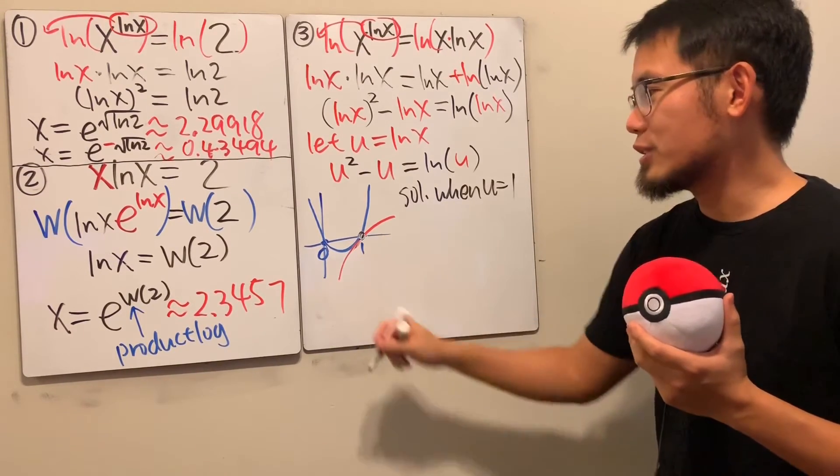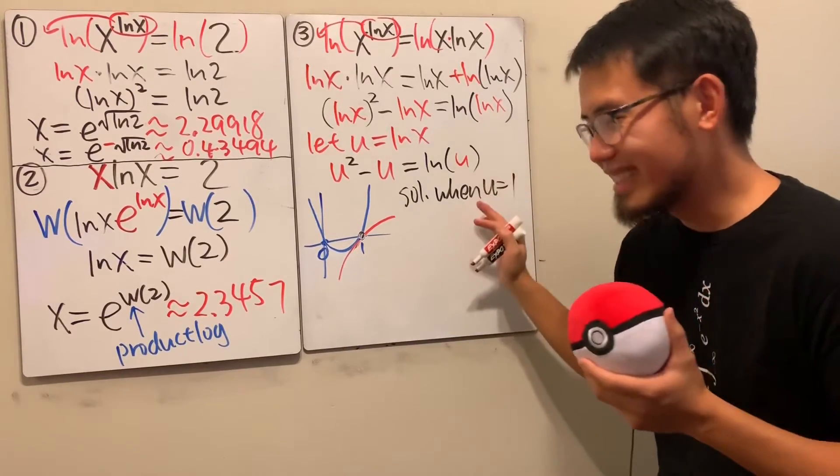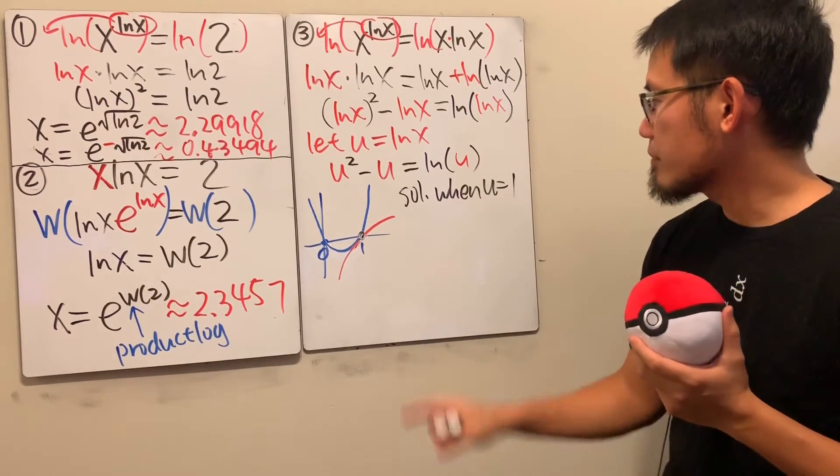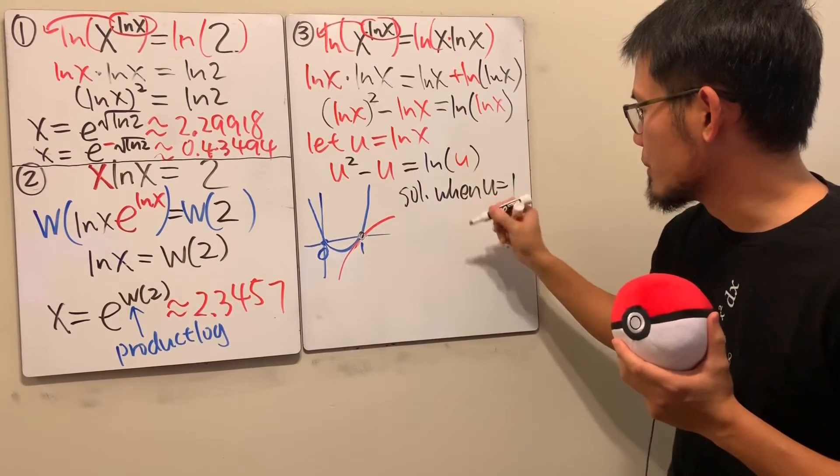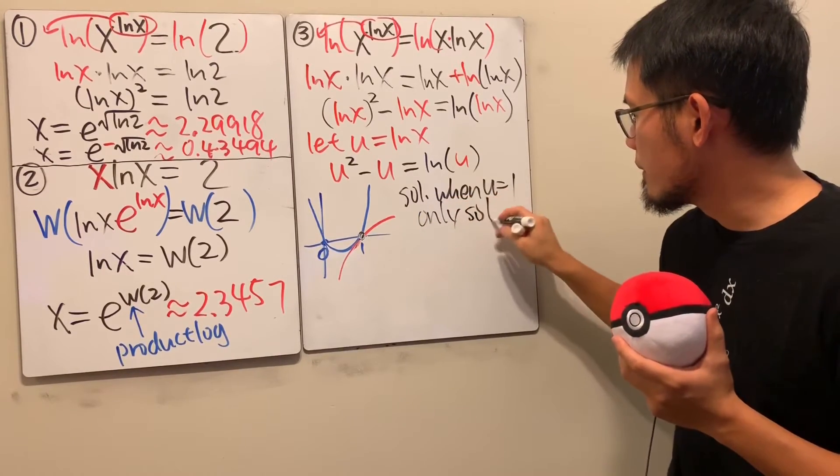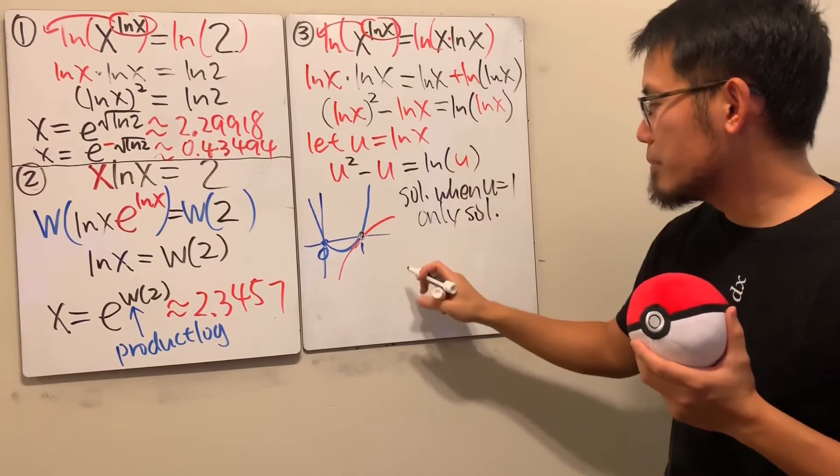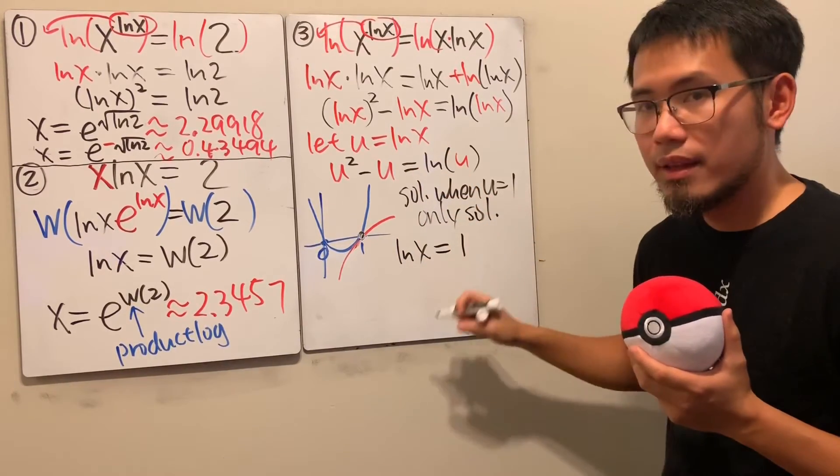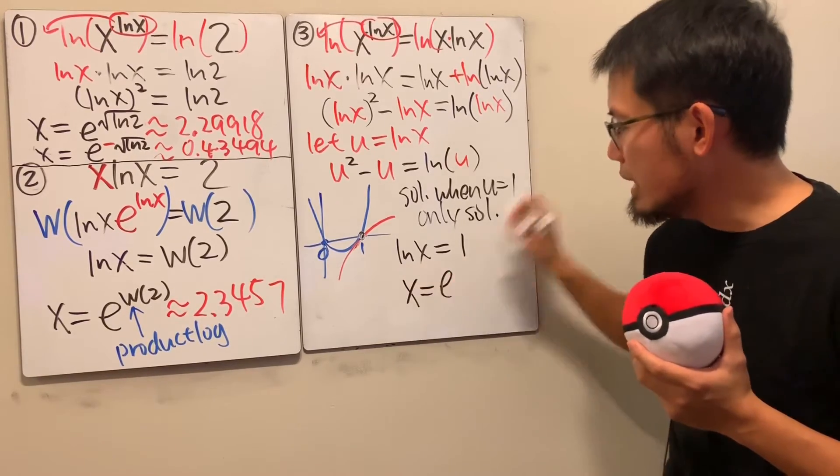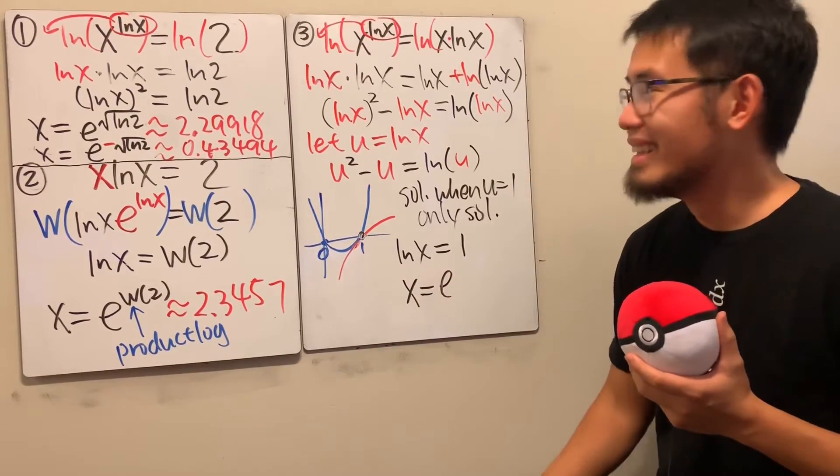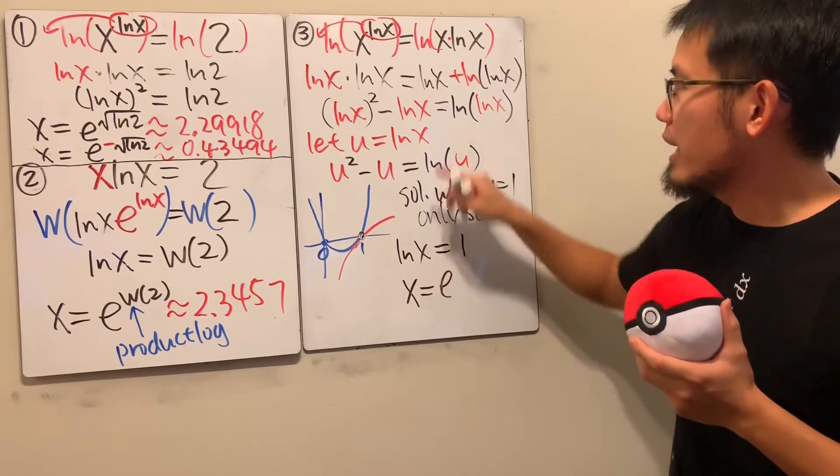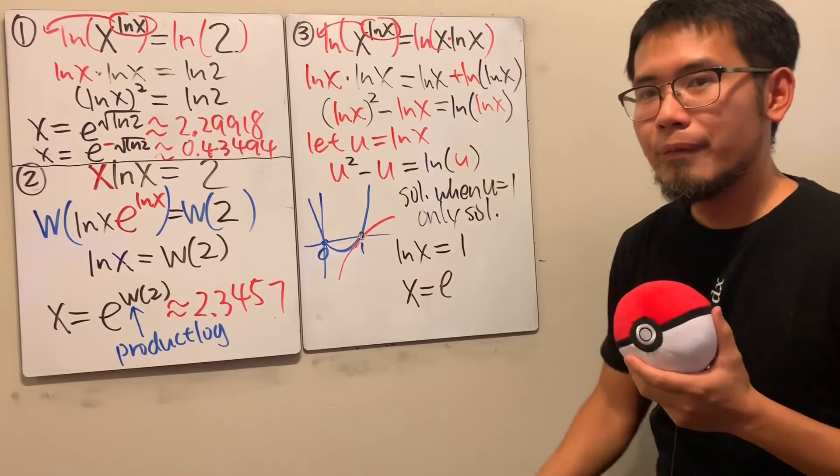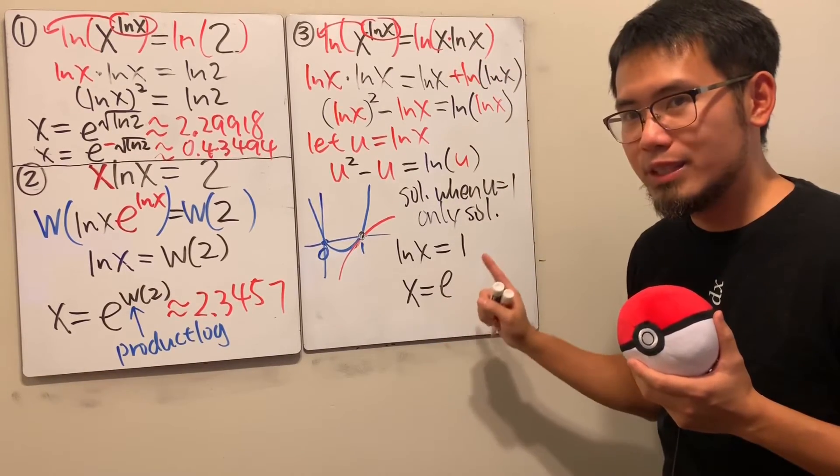And then you can also argue by the graph that they will not intersect anymore. And depends on how rigorous you want to get. But again, just trust me if you would like. u is equal to 1. In fact, it's the only solution. All right. So this is the only solution right here. I'll just tell you only solution. So what does that mean? That means we have to have ln x to be equal to 1, which implies x has to be equal to e. Very cool. The truth is, if you look at the graph of x to the ln x power and also x times ln x, they will intercept only one time when x is equal to e.